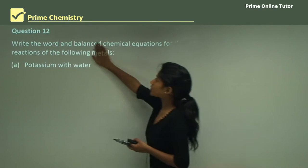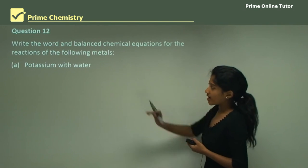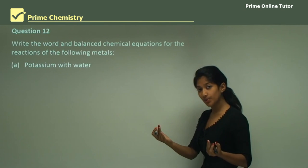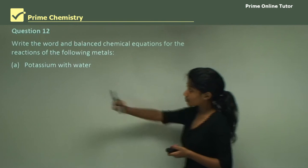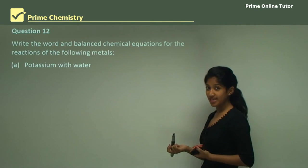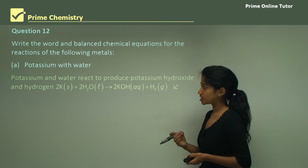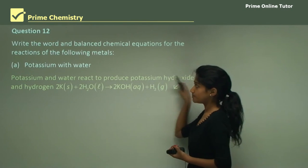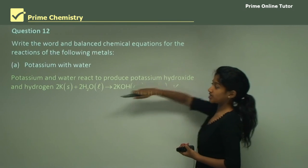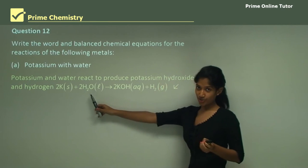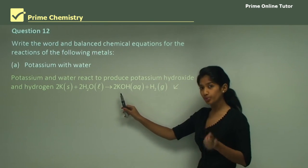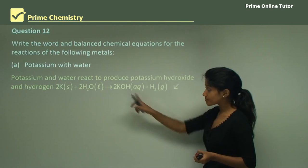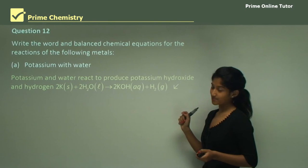Question 12 has three parts: write a word equation and a balanced chemical equation for each reaction. Part A: potassium with water. Potassium is very rapid in reaction. Potassium reacts with water to form potassium hydroxide and hydrogen. In chemical formula: potassium is K, water is H2O, and potassium hydroxide is KOH — potassium is group one with valency of one and hydroxide has valency of minus one — plus hydrogen gas.